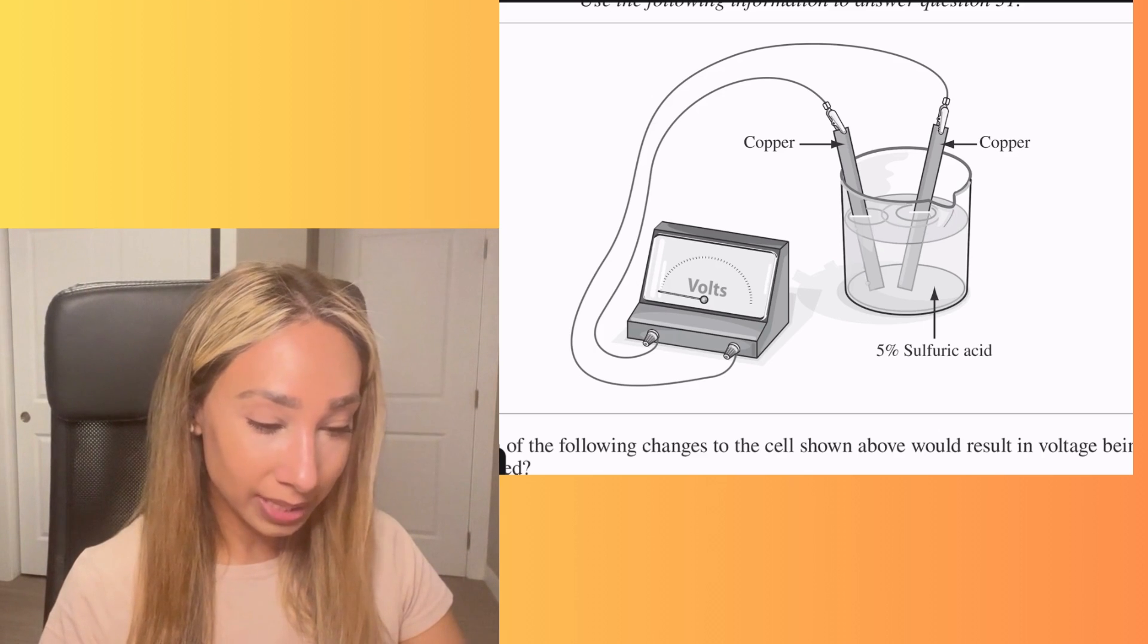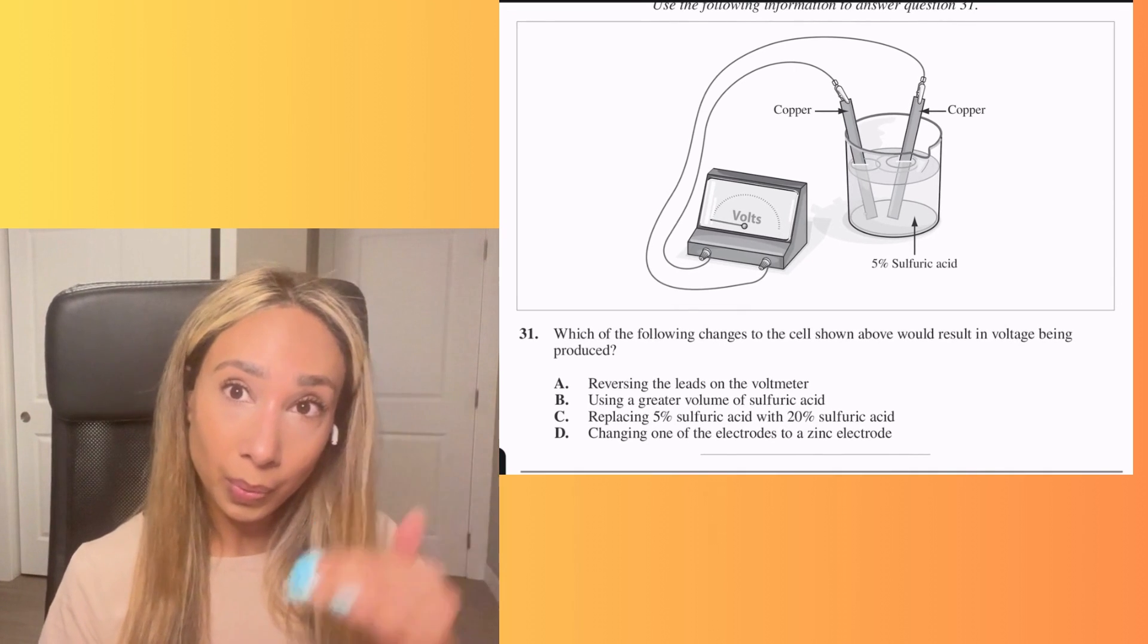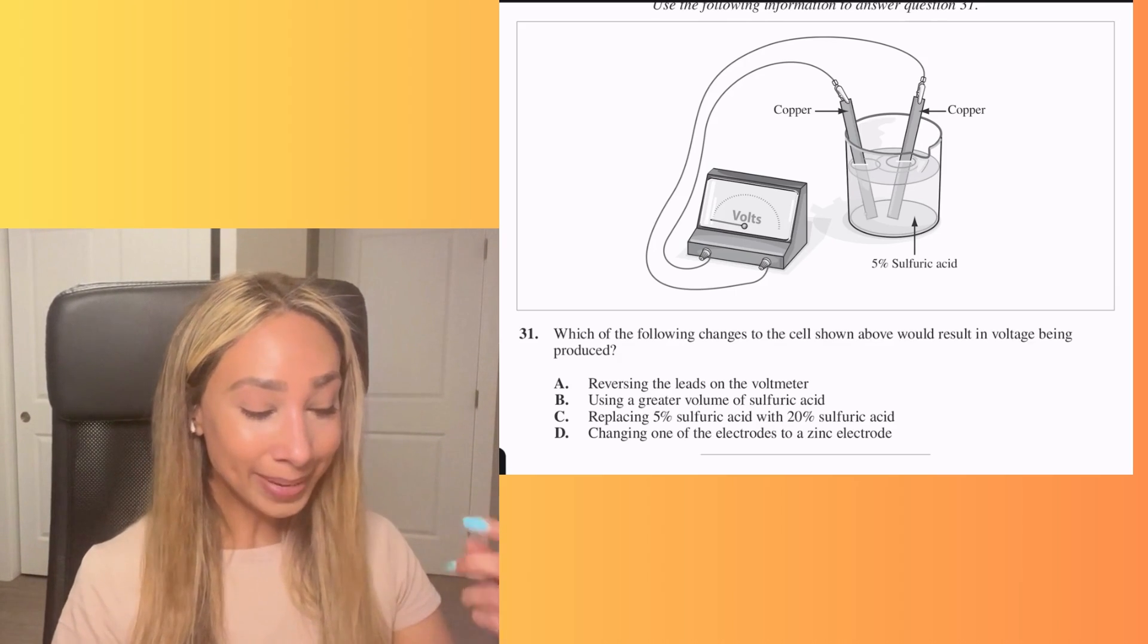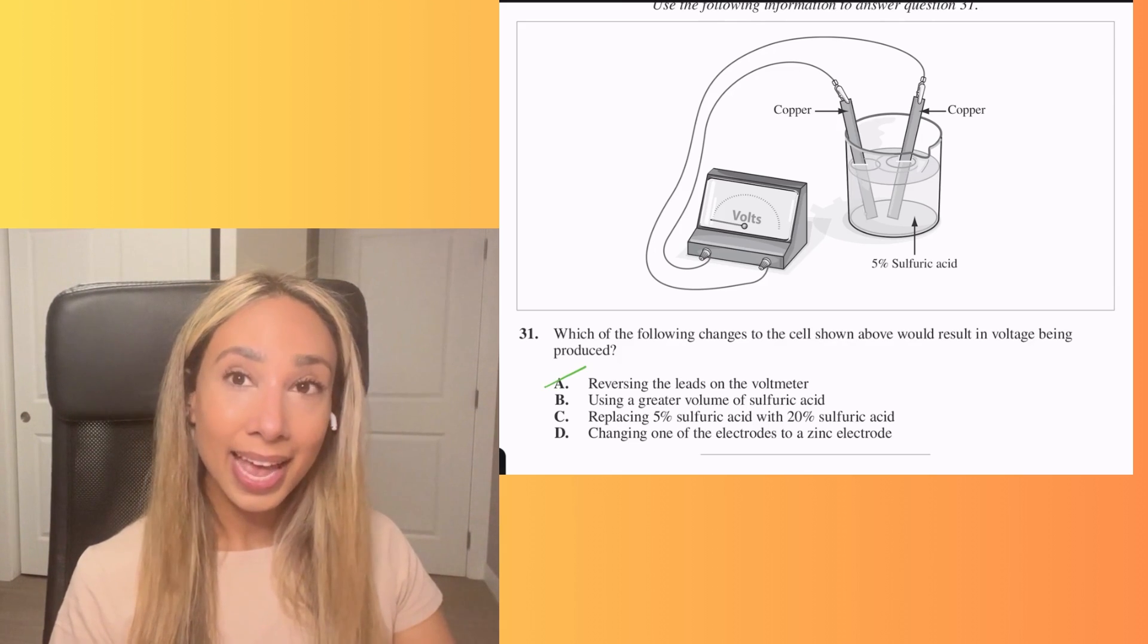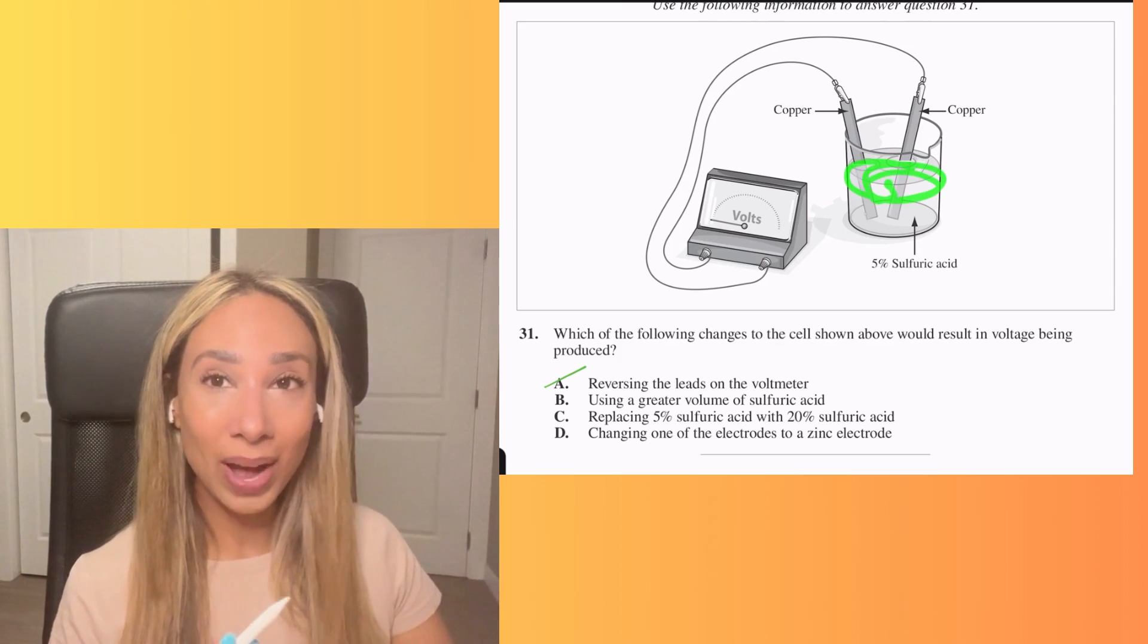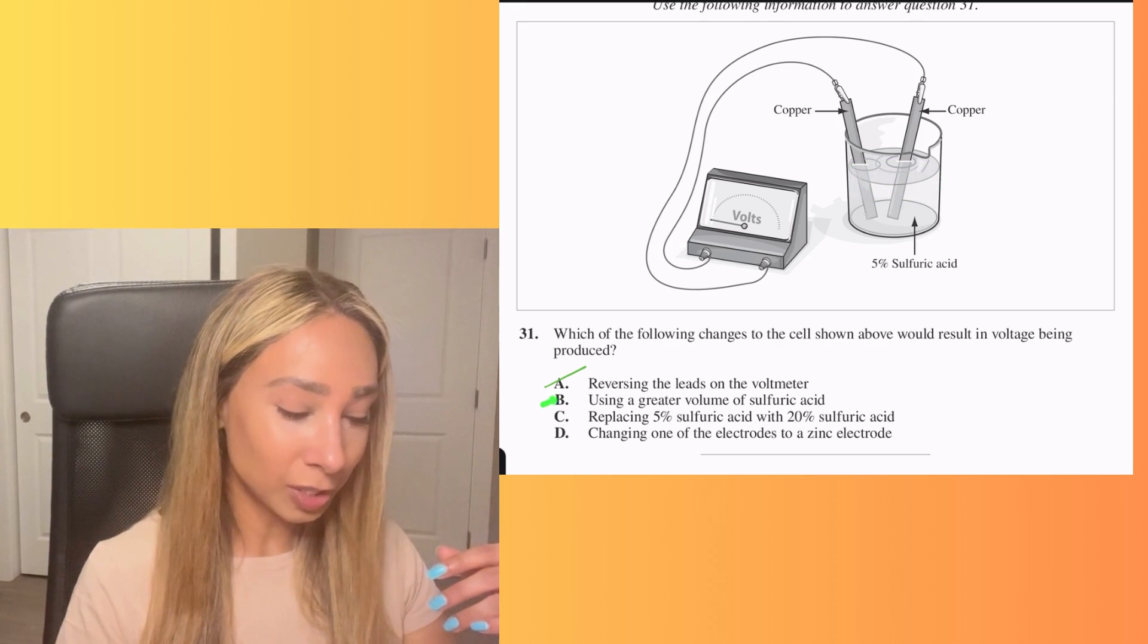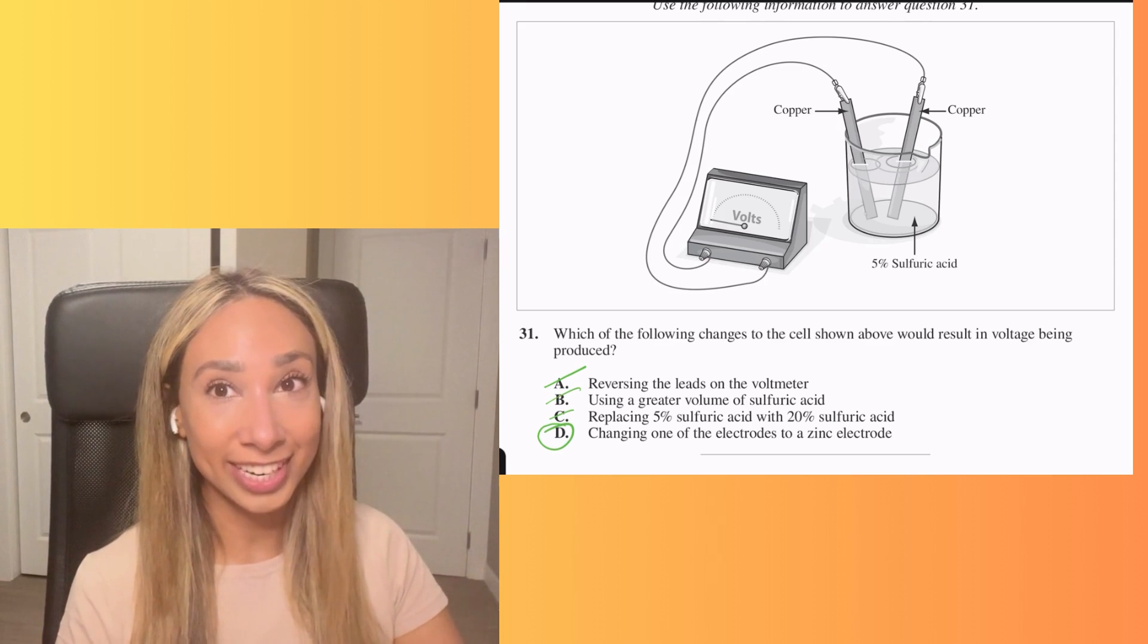So therefore if we look at our options here, there's really only one that's going to work. Reversing the leads on the voltmeter, that's not going to make a difference because there's no current being generated. B and C are quite similar in the sense that they're saying it's the acid and increasing the amount of acid is going to increase the current. That's not the case if you don't have electrons moving from one side to the other. So our only option for this one is going to be option D, where we change one of the electrodes. In this case, we're going to change it to zinc and that's going to generate our current.